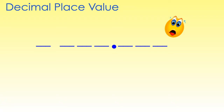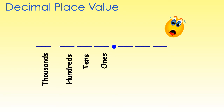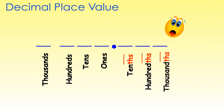In a decimal number, we have a decimal point. The places to the left of the decimal point are the ones, tens, hundreds, thousands, and the list goes on. The places to the right of the decimal point are tenths, hundredths, thousandths, and again the list goes on.